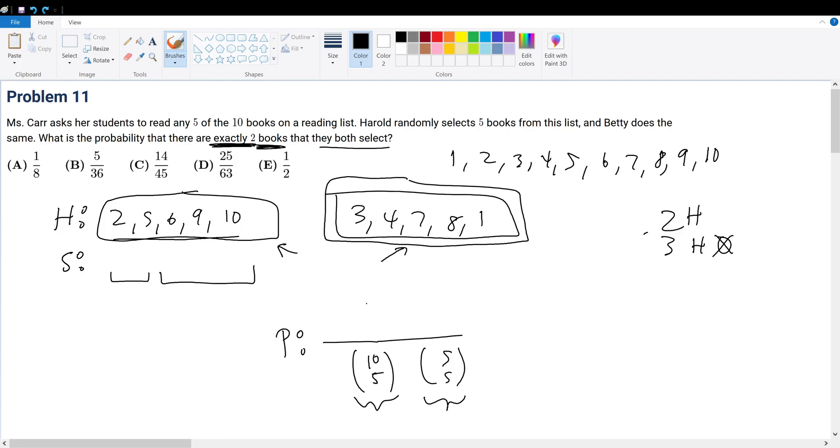The numerator is the number of selections that we can choose from these total groupings. Well, how do we do that? Well, from Harold's pile, there's always going to be 5 books, because everyone must read 5 books. And we want 2 of them, so 5 pick 2. But then again, we want 3 of them from the book that Harold did not choose to read. So it's 5 pick 3.